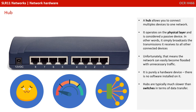A hub allows you to connect multiple devices to one network. It operates on the physical layer and is considered a passive device — in other words, it simply broadcasts the transmission it receives to all other connected devices. Unfortunately, that means the network can easily become flooded with unnecessary traffic. It is purely a hardware device with no software installed on it, and hubs are typically much slower than switches in transferring data.